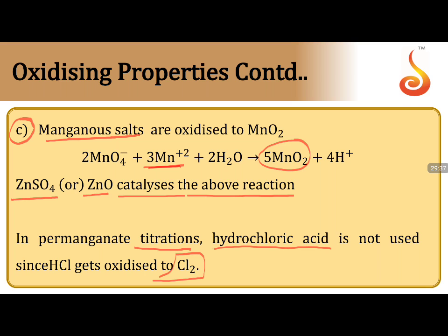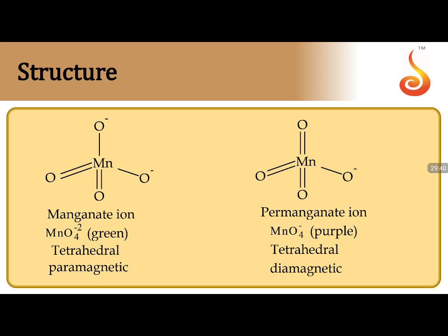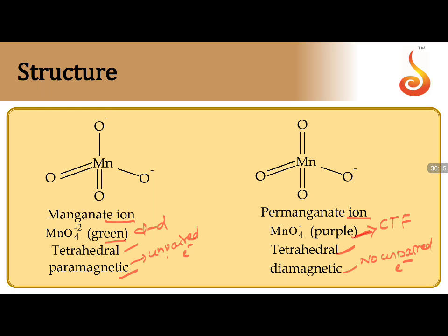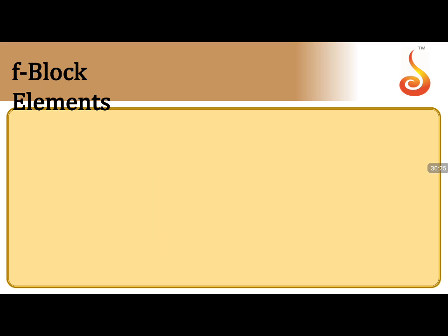Structure of manganate (MnO₄²⁻) and permanganate (MnO₄⁻): manganate is green colored, tetrahedral, and paramagnetic (has unpaired electrons). Permanganate (MnO₄⁻) is purple colored, tetrahedral, and diamagnetic (no unpaired electrons). Despite having no unpaired electrons, permanganate shows color due to charge transfer phenomena between the ligand and central metal ion — not d-d transitions.